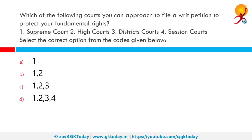Anything issued under authority is a writ — orders, warrants, directions etc. There are five major types of writs: habeas corpus, mandamus, prohibition, quo warranto and certiorari, each with different meaning and implications. In India, both the Supreme Court and High Court have been empowered with writs jurisdiction. The correct answer is 1 and 2. Parliament by law can also extend the power to issue writs to any other courts for local limits of jurisdiction.